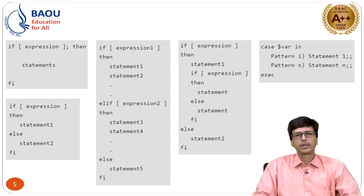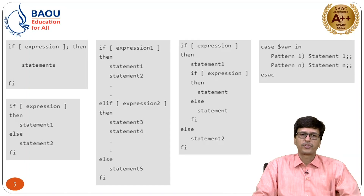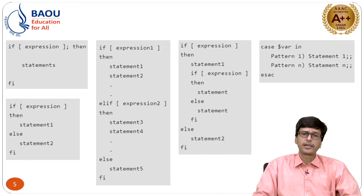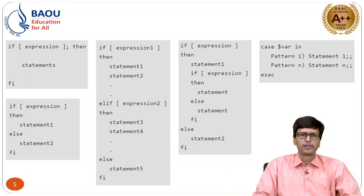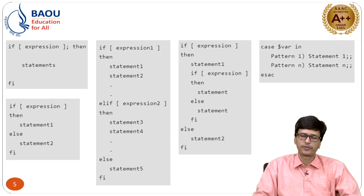If you want to check multiple conditions, you can use the if-elif block. The structure is: if with a condition, then the statements to execute, then elif with another condition, and the block of statements for that case. At the end, an else part handles the case where no condition is satisfied. Obviously, the entire block is finished with fi.